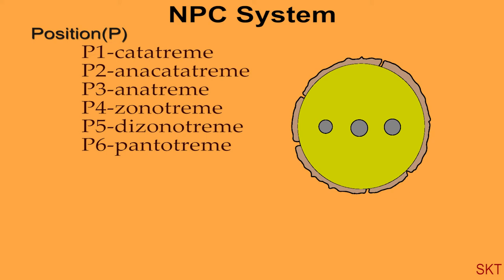P4 is called zonotreme having apertures on equator or sub-equator as shown in the diagram. P5 is also called as dizonotreme, apertures arranged in two or more zones. P6 is also called as pantotreme, here apertures are scattered all over the place.